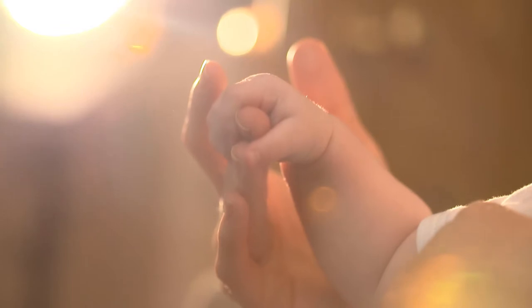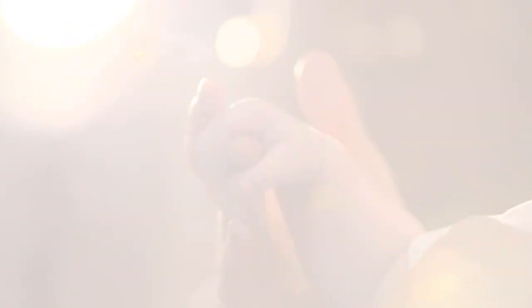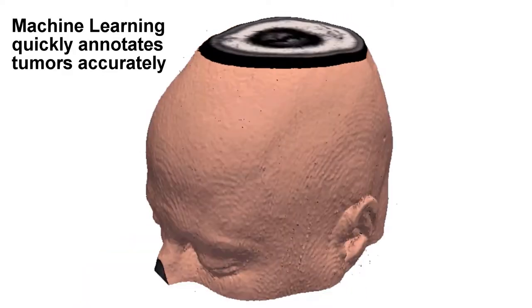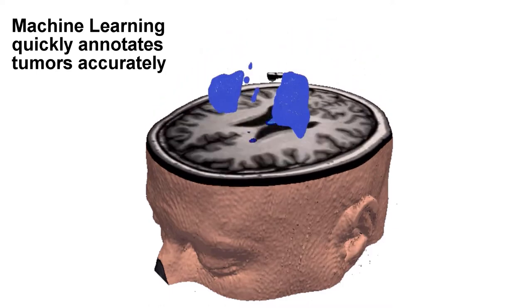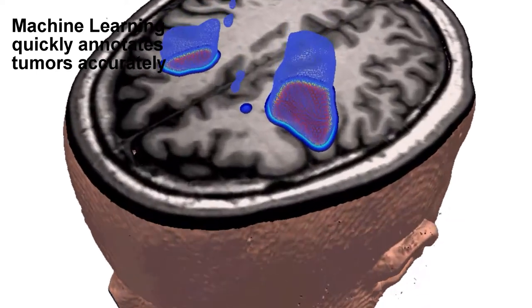A particularly challenging problem in medical imaging is image segmentation. In image segmentation, we are trying to extract quantitative measures from images. We are trying to delineate structures that look abnormal — for instance, a brain tumor in an MRI scan — and we are trying to measure in the image how big that tumor is.